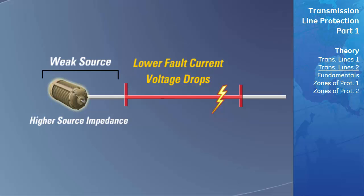As you can see, the system impedance ratio is a very important factor in the stability of a power system. At the time of a fault, it must be considered when determining the type of protection needed and the speed at which the faults need to be cleared by relaying.